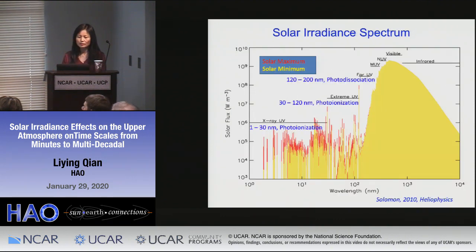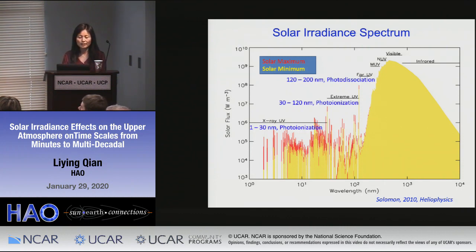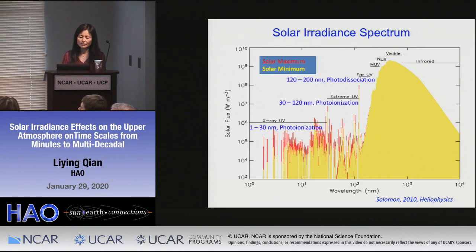This is a solar irradiance spectrum, showing solar flux on the y-axis and wavelength in nanometers on the x-axis, from shorter to longer wavelengths. We have X-ray ultraviolet, extreme ultraviolet, ultraviolet, visible, and infrared. The shorter the wavelength, the larger the energy of the photon. The XUV and extreme EUV have the strongest energy and can ionize the thermosphere species, creating ions and therefore creating the ionosphere.